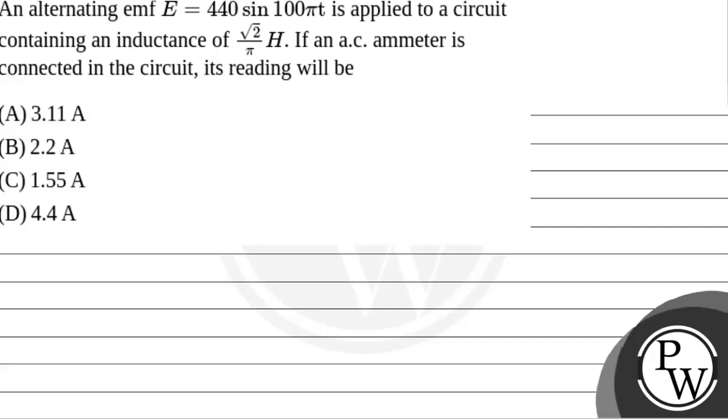Hello with your question. The question says that an alternating EMF E = 440 sin 100πt is applied to a circuit containing an inductance of √2/π Henry. If an AC ammeter is connected in the circuit, its reading will be? We will solve this question.